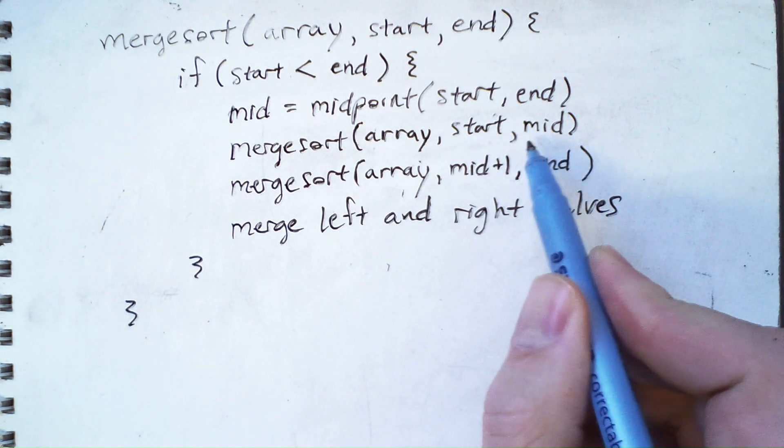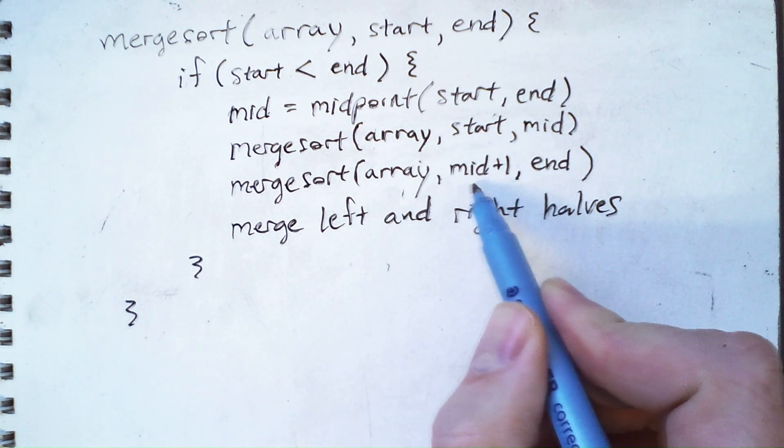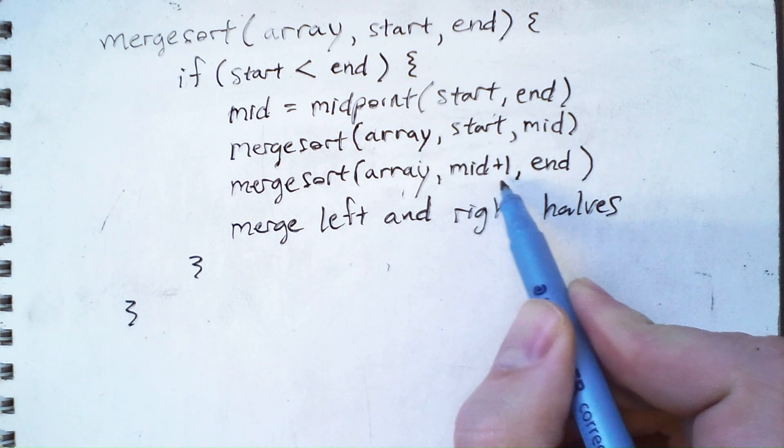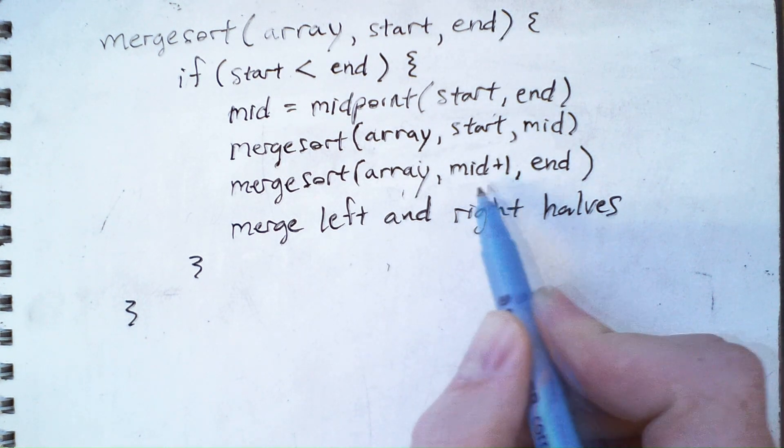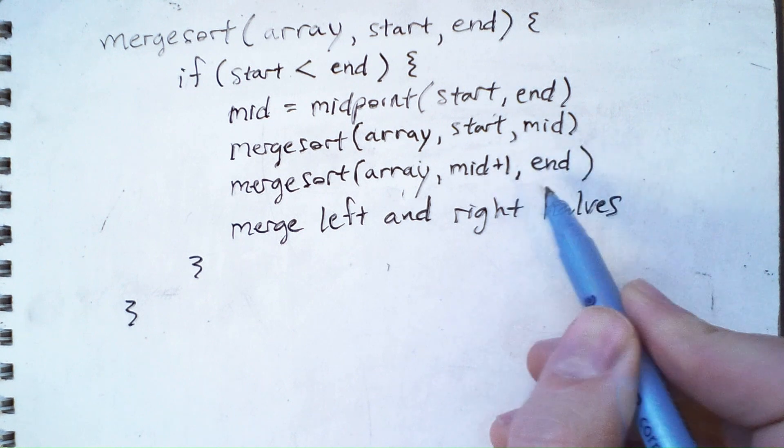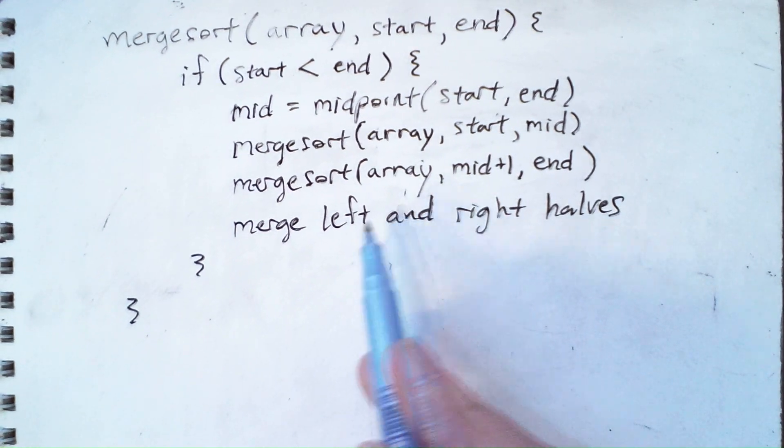And from here, we're going from start to the midpoint. That's inclusive. And therefore, the next one has to start at midpoint plus one, so that it is a different index. We don't have any overlap. We don't want any overlap in these arrays.